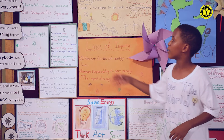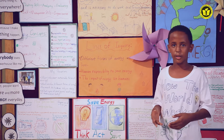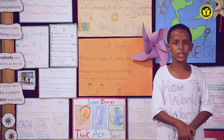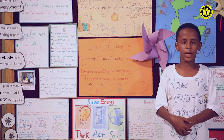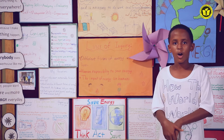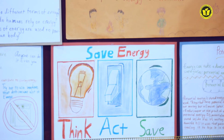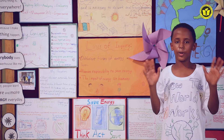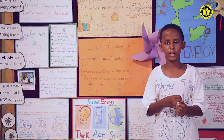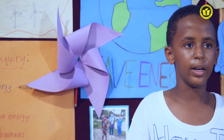My key concepts are form, responsibility, and causation. Now let me explain to you what energy is. Energy is the ability to work, and how things change and move. All things that show characteristics of life have energy. Energy can take a diverse amount of forms, like solar energy, wind energy, hydro energy, and bio energy.